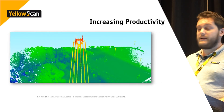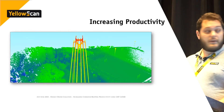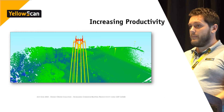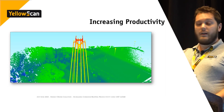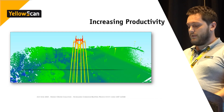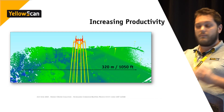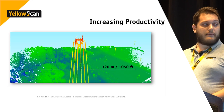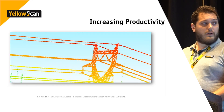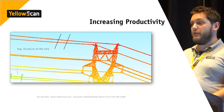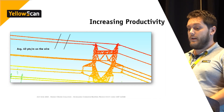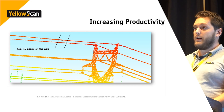Here are a few results from the Ultra. This is an 80-meter flight above a power line in France — that's a rugby field, not a football field. The total usable swath from edge to edge is 320 meters. On the power line itself you get a pretty decent description of the wire — around 40 points per meter on the wire. That's how you increase productivity.